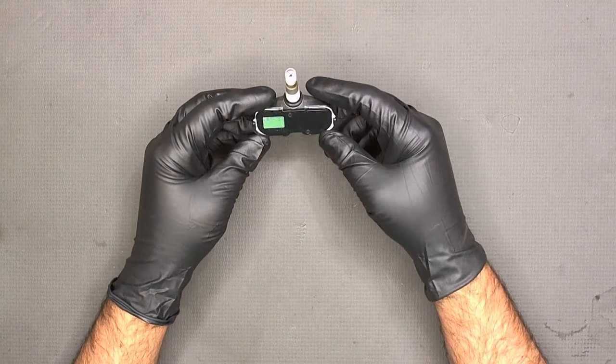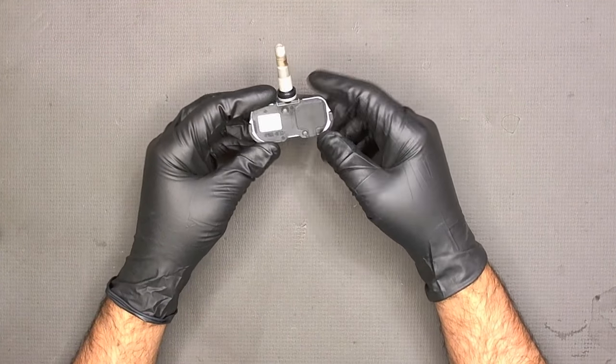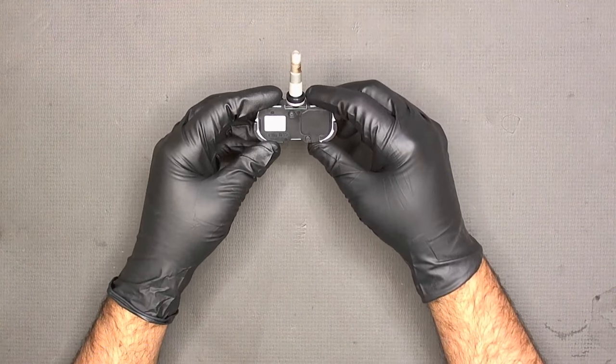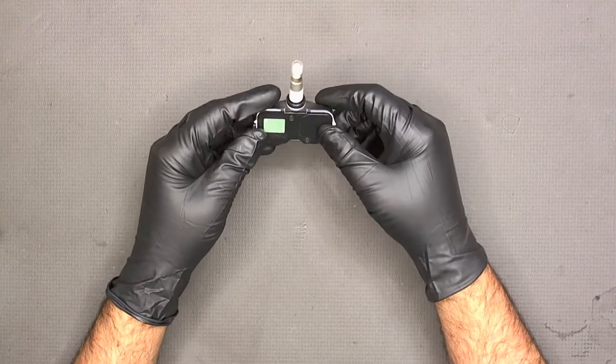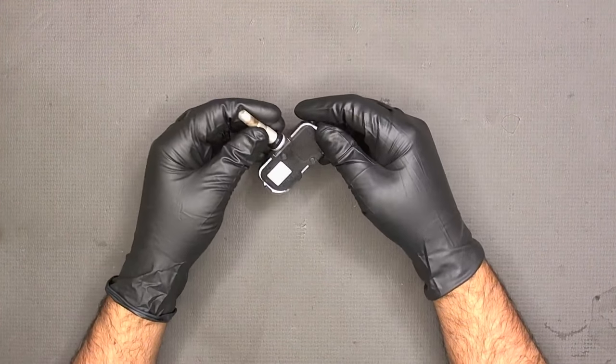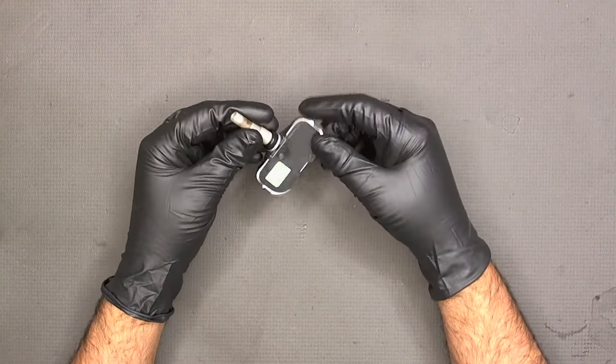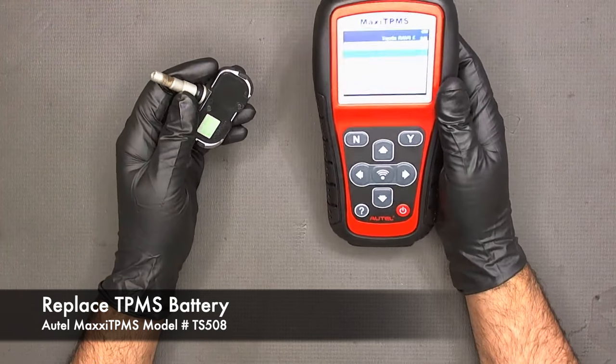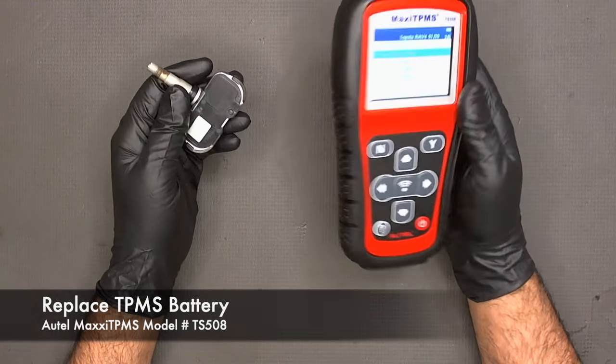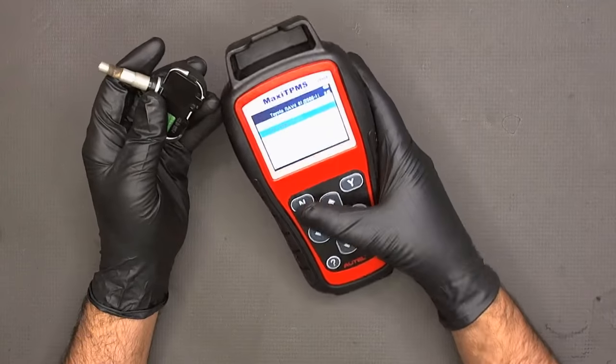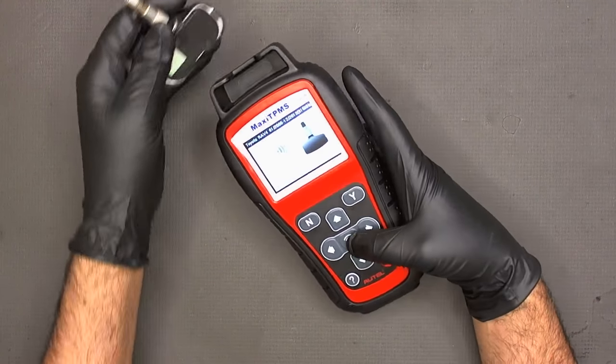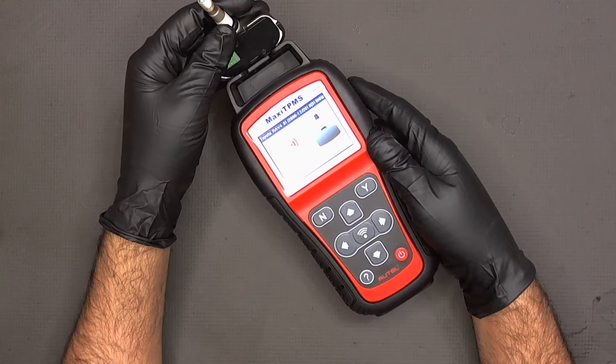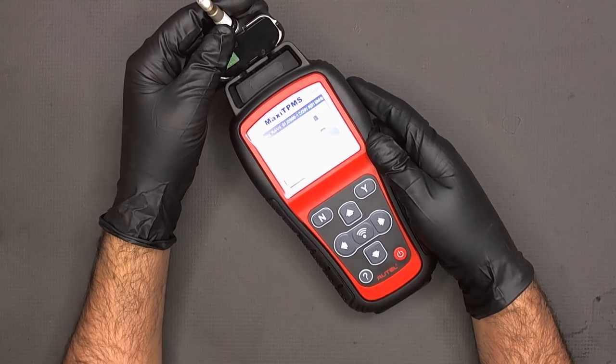Usually the sensor doesn't go bad, the circuit in it usually doesn't go bad, it's the battery inside it that is weak. So one way to make sure that the sensor is bad is using a TPMS diagnostic device like this and we can scan for it and see it's not registering.